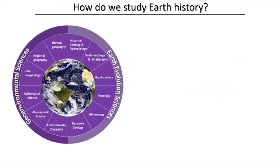How do we study earth theory? Until the previous slide, I introduced how climate changed before, what was mass extinction, and how volcanism influenced. How we studied this — basically, in earth science, including disaster science, we have many fields like human geography, geodynamics, stratigraphy, mineralogy, and environmental dynamics.